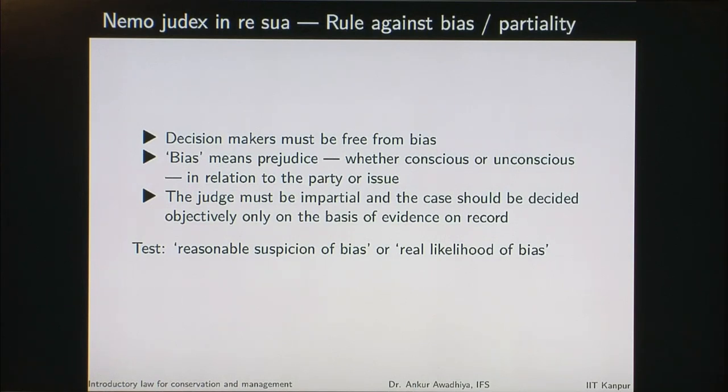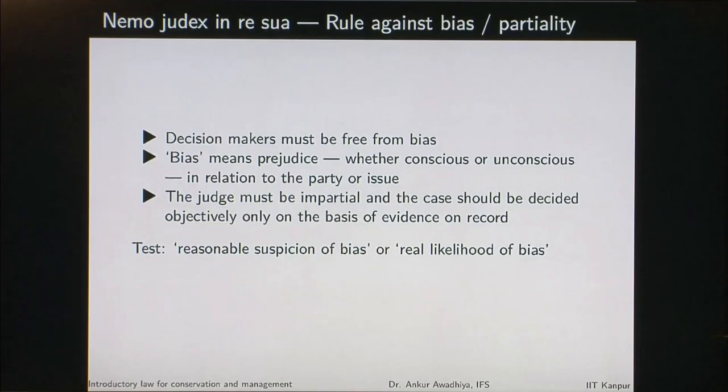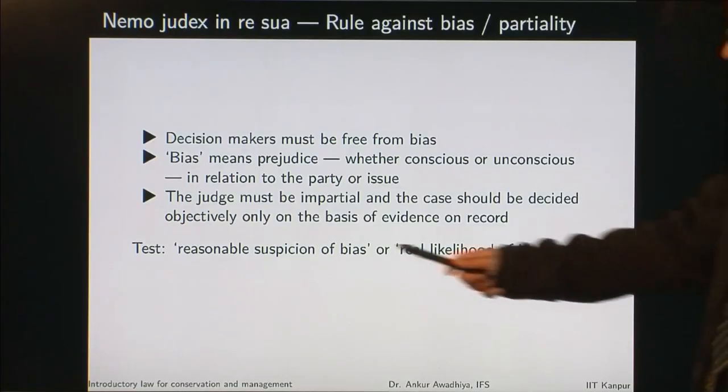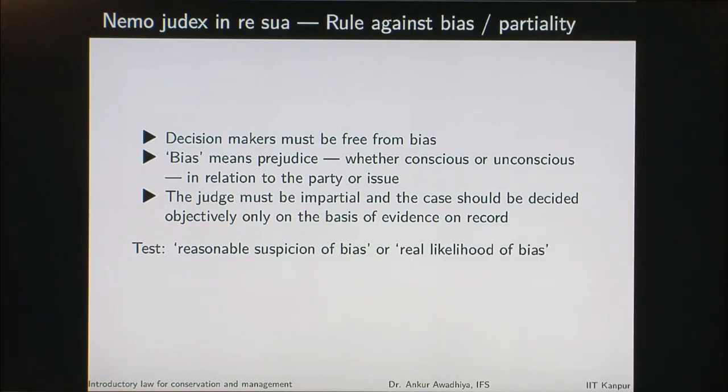The test in this case is a reasonable suspicion of bias or a real likelihood of bias. You cannot prove whether a judge has a bias because the bias is inside the mind of the judge. So the test is: if there is a person who has all the knowledge about this case, would that person say this judge is biased? That is a reasonable suspicion of bias. How likely is it that the judge may be biased? That is something we need to keep in mind.